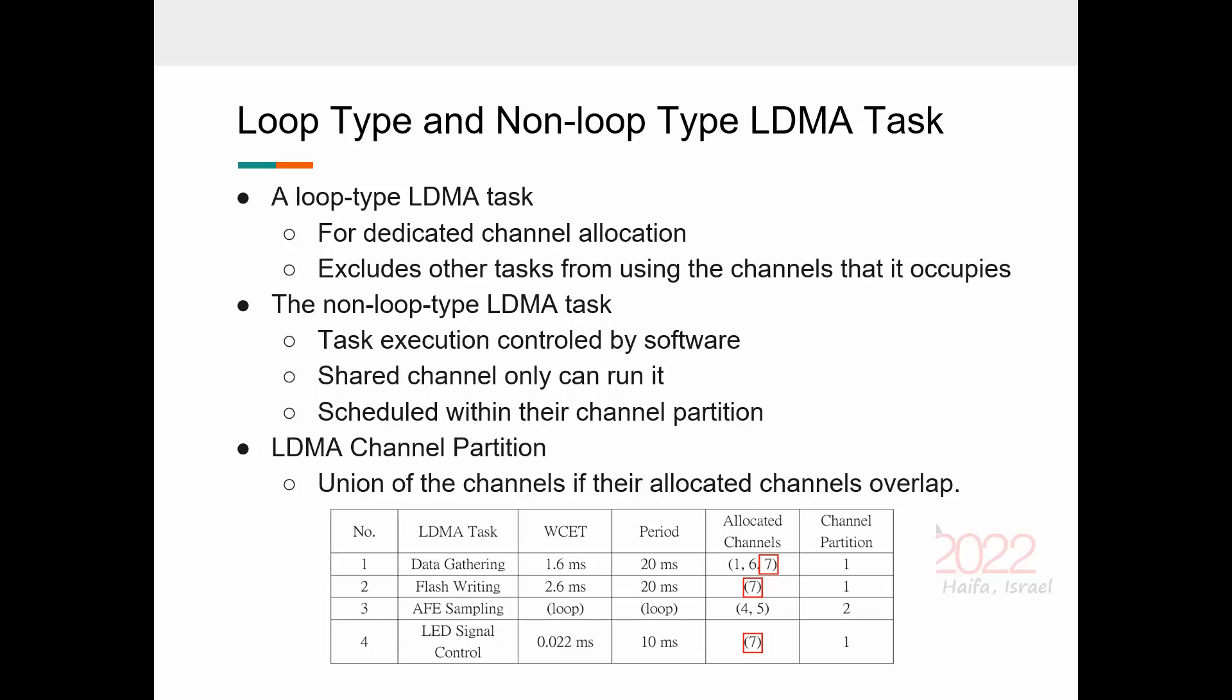A LDMA channel partition, which means the union of the channels allocated to those input-output tasks if any of their channels overlap. For example, tasks 1, 2, and 4 all have the same allocated channel, which is channel 7. So tasks 1, 2, and 4 are in the same channel partition, and task 3 is in another partition.